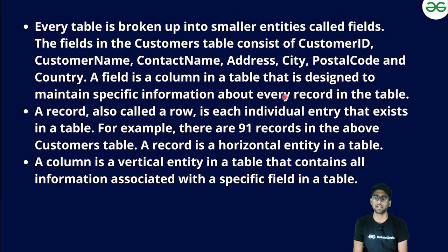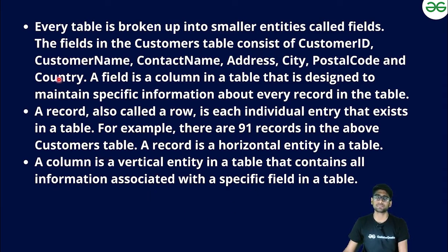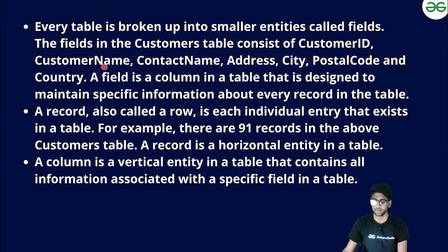Inside the rows you can have the data of a particular individual — for example, in a customer table, a customer's name and customer ID fill the row. A column is a vertical entity in the table containing all information associated with a specific field. Rows are horizontal entities. The key terms to remember are: fields refer to columns, and records refer to rows. The top row represents the names of the fields.